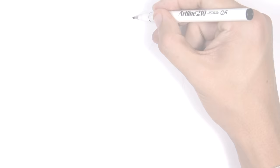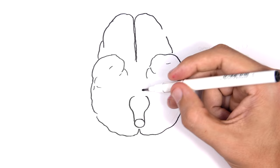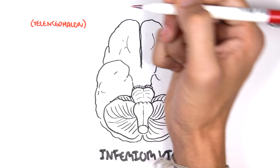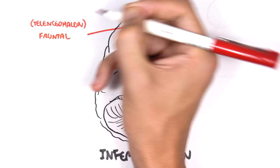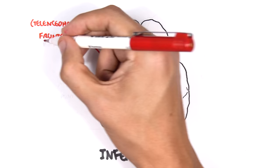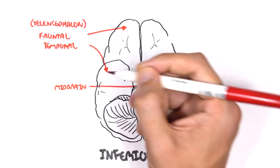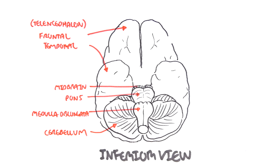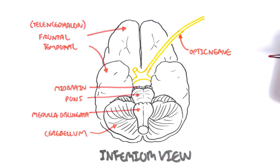Now let us look at the brain from an inferior view. From this inferior view you can see the telencephalon — your cerebral cortex — and you can see the frontal lobe and the temporal lobes on the sides. Then your brainstem, which is made up of your midbrain, pons, and medulla oblongata. This is your cerebellum.